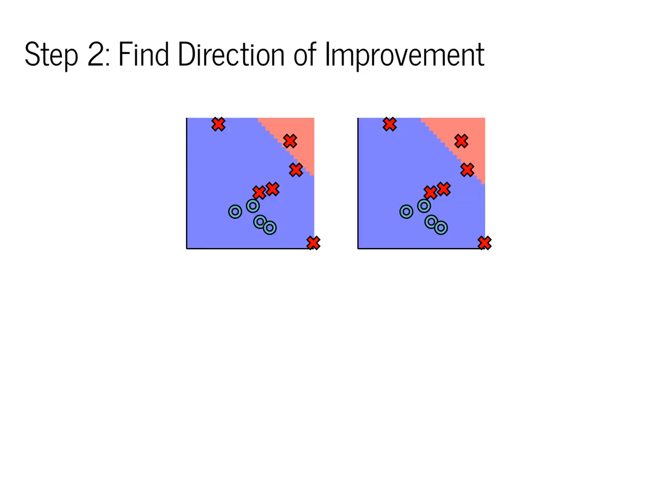Step two is to find the direction of improvement. If you look at these two diagrams, you can see that they look very similar. However, the one on the right is slightly better in terms of our loss. Step two will be about figuring out which direction is better to move, and in particular, how a small change in this single bias parameter would impact our final loss.